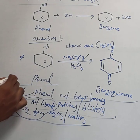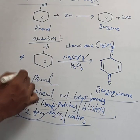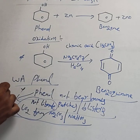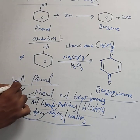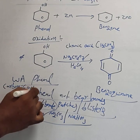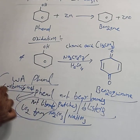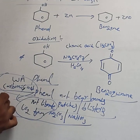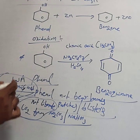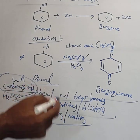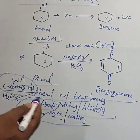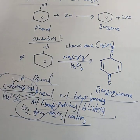The main reason phenol does not decompose carbonates and bicarbonates is that phenol is a weaker acid than carbonic acid (H2CO3). Since phenol is weaker than carbonic acid, it cannot decompose carbonates or bicarbonates. These are the properties of phenol.